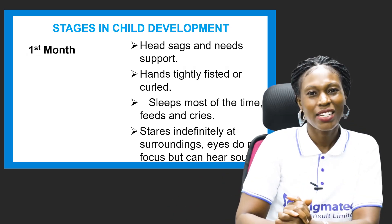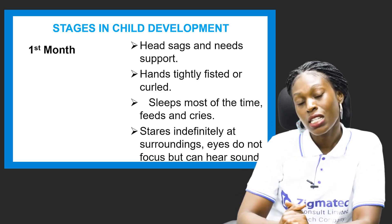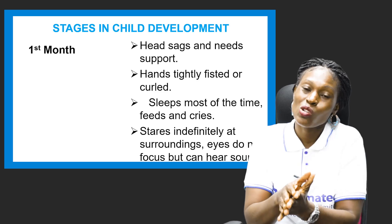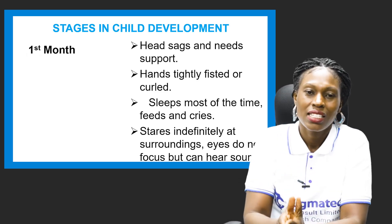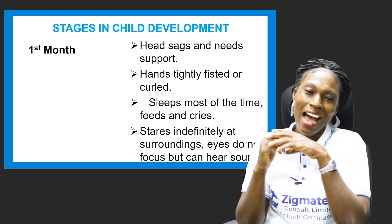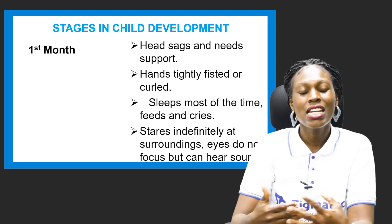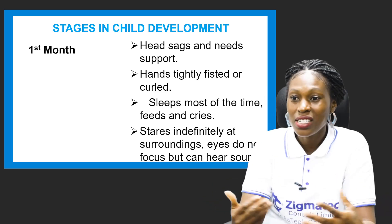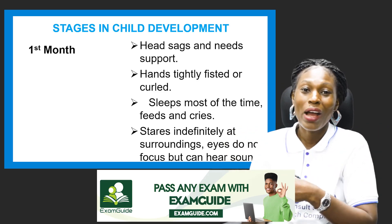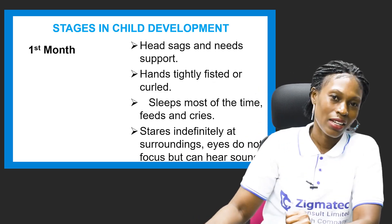Let's look at the stages in child development. At the first month, the head needs support. Hands are tightly fisted. They sleep most of the time, feed, and cry. They stare indefinitely at their surroundings — eyes do not focus — but they can hear sounds. They're just looking everywhere, wondering what is happening around them.